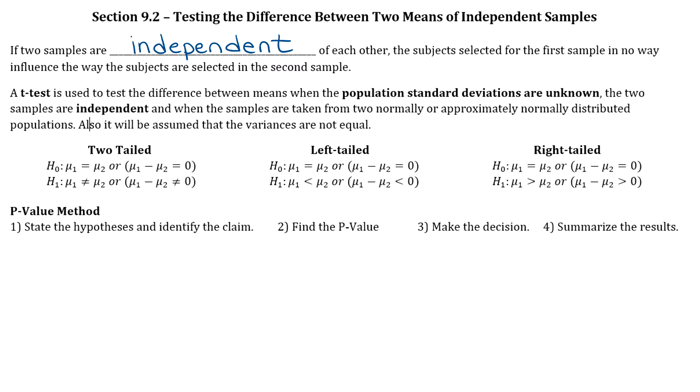And to do this hypothesis test, we're going to do a specific type of t-test. I'll tell you what that is in just a second. Since it is a t-test, we're not going to be able to do the traditional method, so we'll stick with just the p-value method for this section. Okay, so the p-value method, we know the four steps. Those aren't going to change.